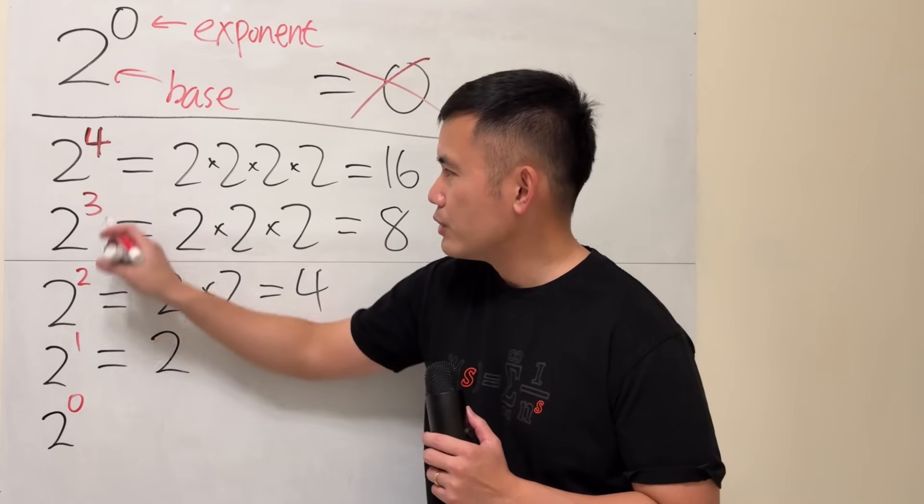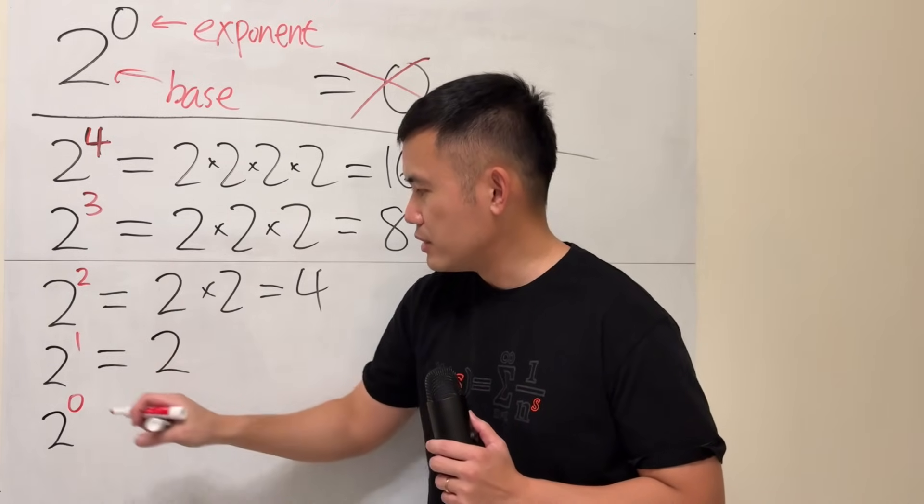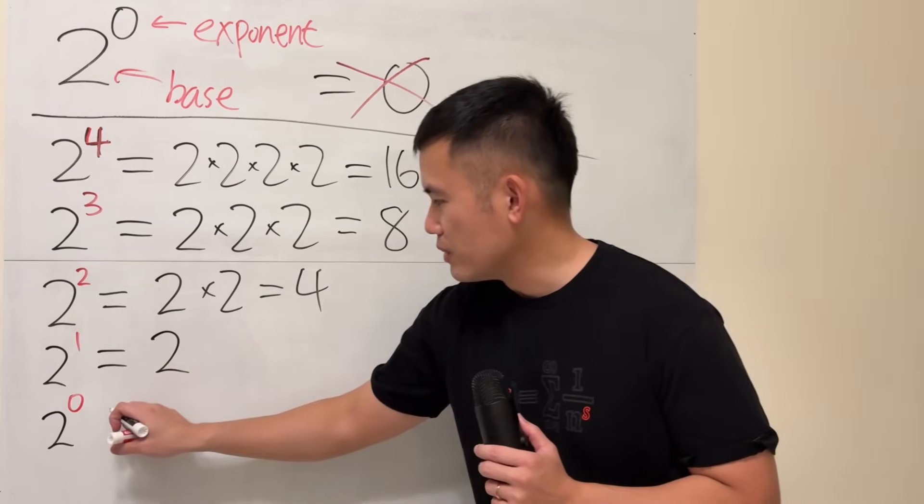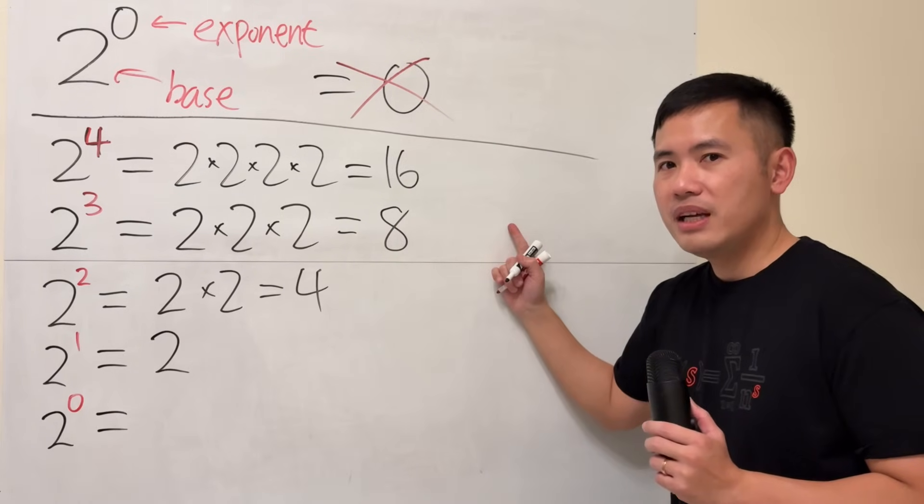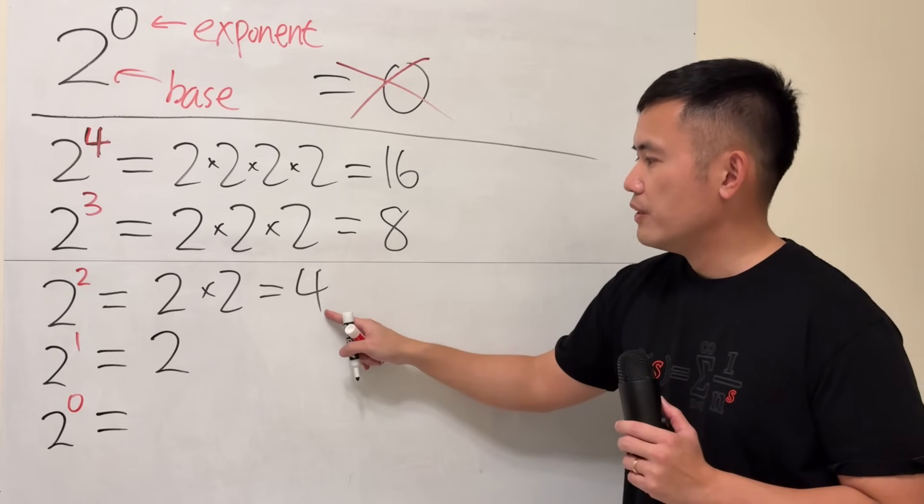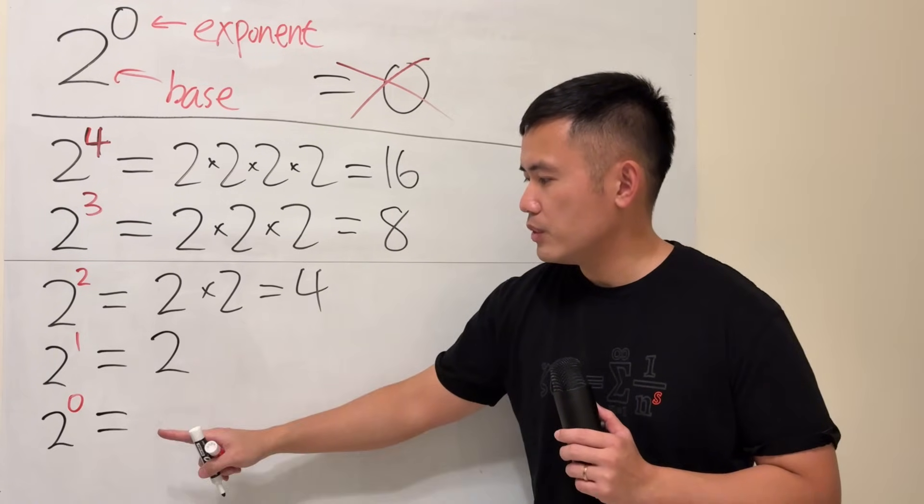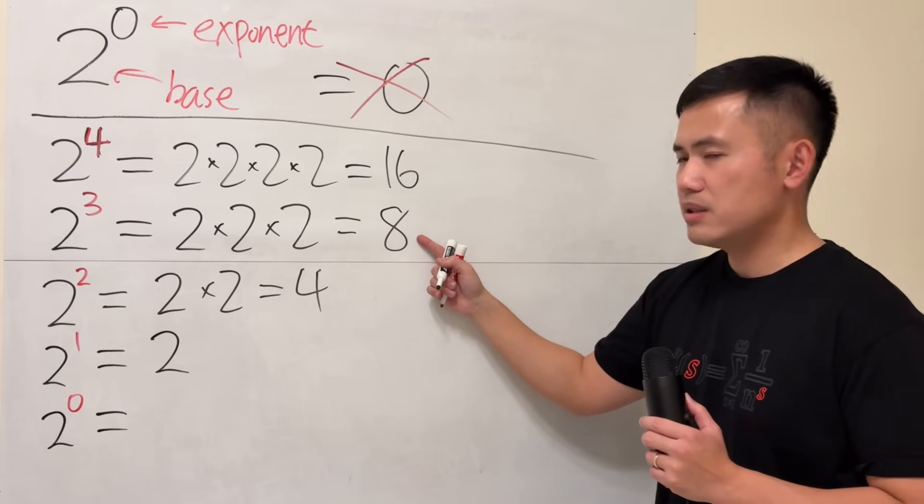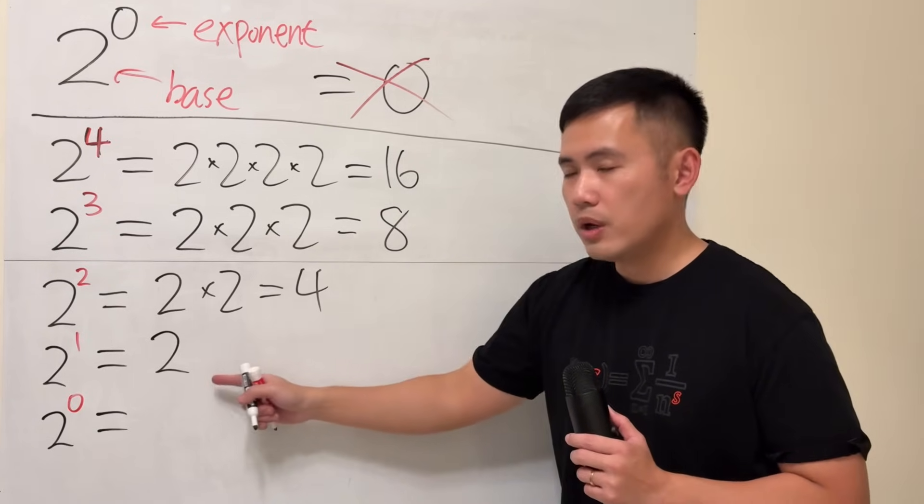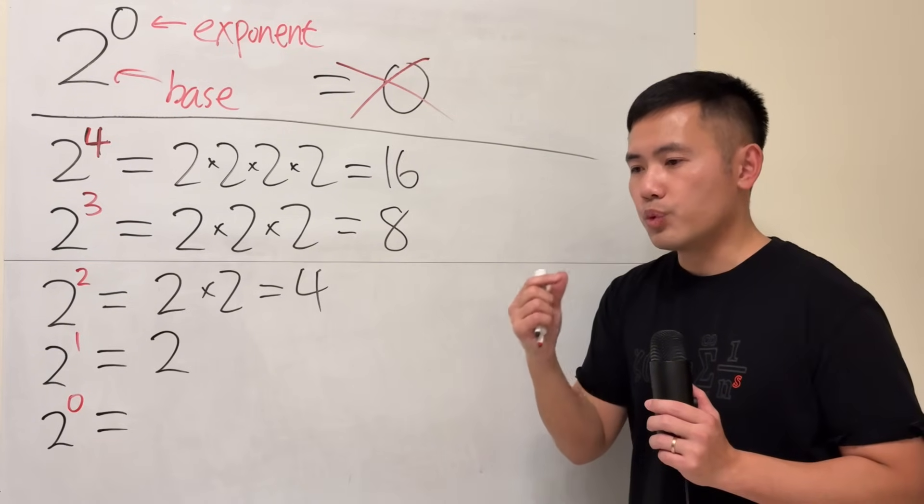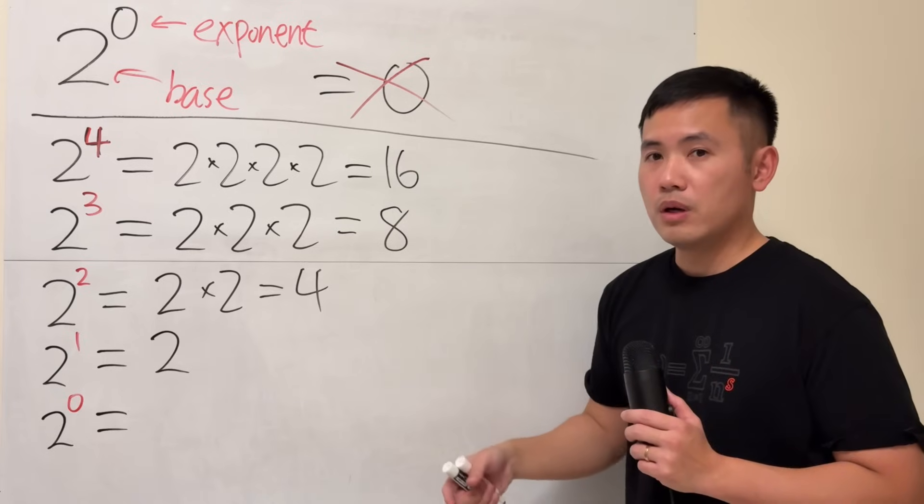But what's the answer, though? If you look at the answers right here, we have 16, 8, 4, and 2. And what's the answer? Well, what's the pattern, though, from 16 to 8? From 8 to 4, from 4 to 2. Do not say minus 8, because we have to make sure the rule works for the next one as well.